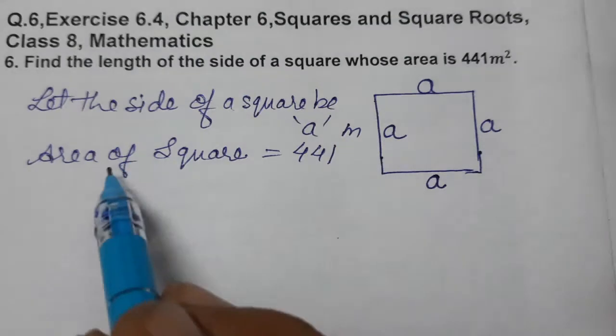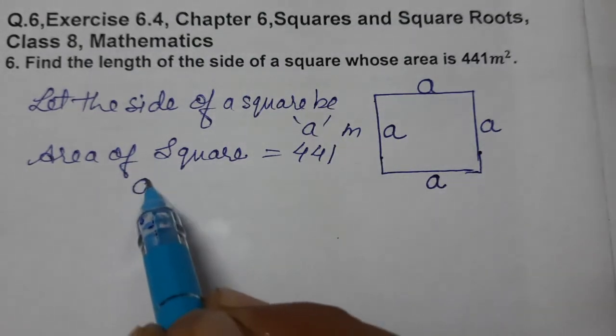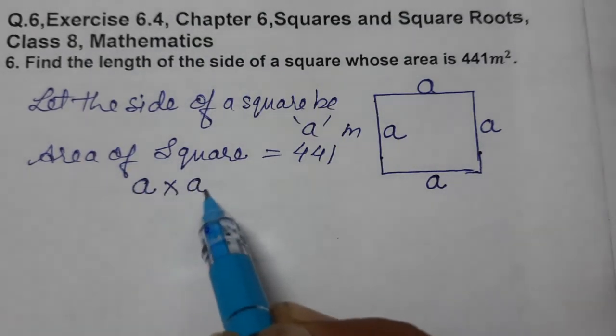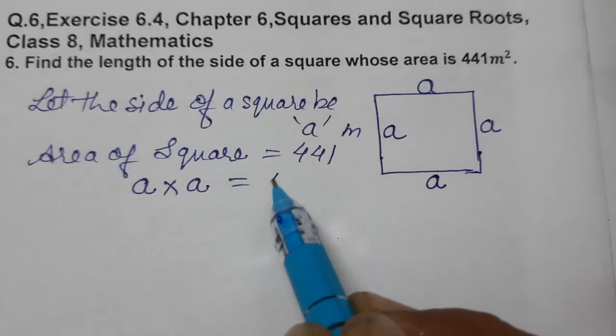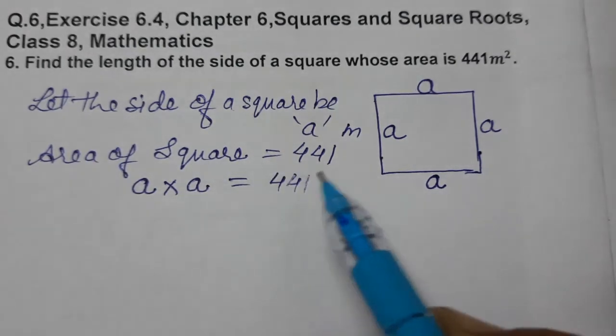Area of square equals side into side. Side is a, so a into a equals 441.